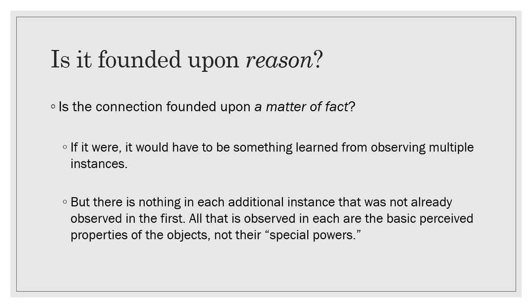So if it's not a relation of ideas, is it perhaps founded upon a matter of fact? If it were, it would have to be something we learned from observing multiple instances — that's what the constant conjunction of causation implies. But there's nothing in each additional instance that was not already observed in the first. All that was observed are the basic sensible properties of the objects, not their special powers.